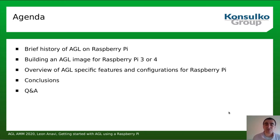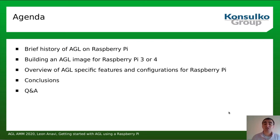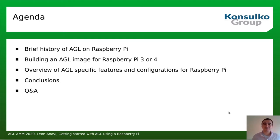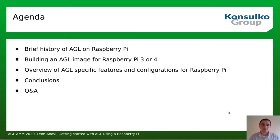The agenda for the next 25–30 minutes covers: a brief history of AGL on Raspberry Pi, the exact steps to build an AGL demo image for Raspberry Pi 3 or 4, an overview of AGL-specific features and configurations for this hardware platform, and finally conclusions and Q&A. This talk is appropriate for beginners — no previous experience with the platform is required.